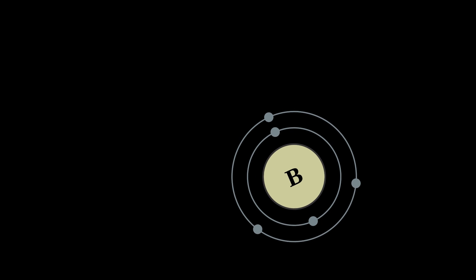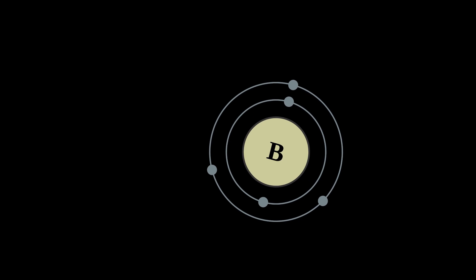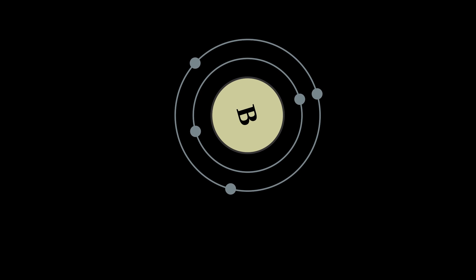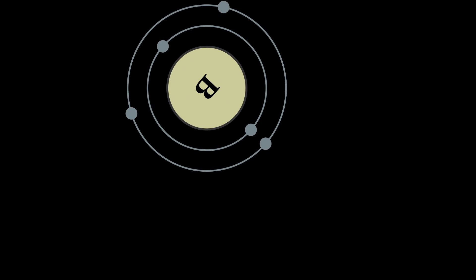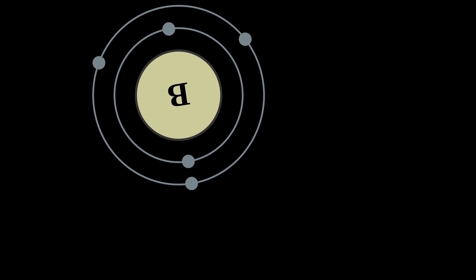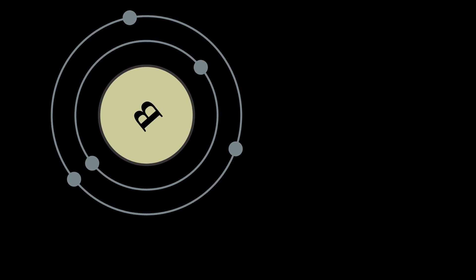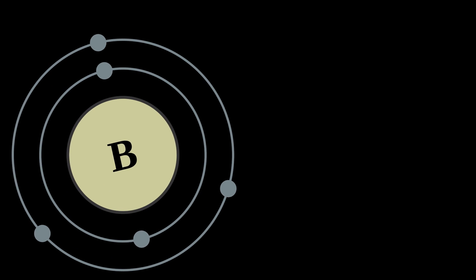Boron is concentrated on Earth by the water solubility of its more common naturally occurring compounds, the borate minerals. These are mined industrially as evaporites, such as borax and kernite. The largest known boron deposits are in Turkey, the largest producer of boron minerals.